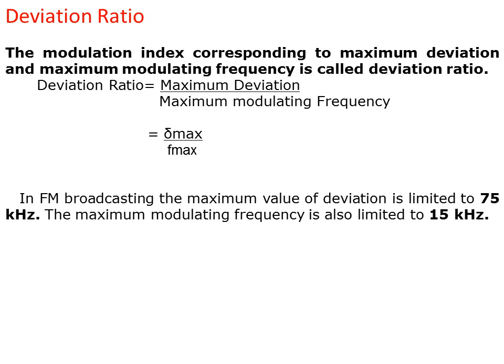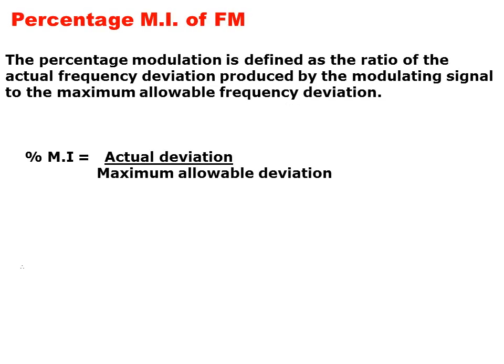In frequency modulation broadcasting, the maximum value of the deviation is limited to 75 kHz, and the maximum modulating frequency is also limited to 15 kHz. The percentage modulation is defined as the ratio of the actual frequency deviation produced by the modulating signal to the maximum allowable frequency deviation. This equals actual deviation divided by maximum allowable deviation.